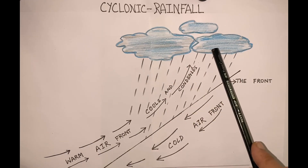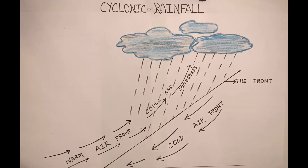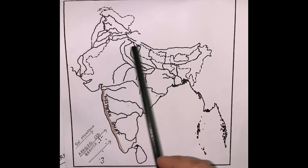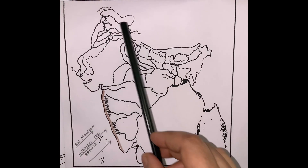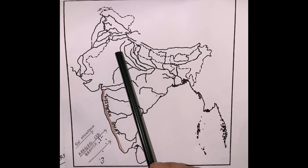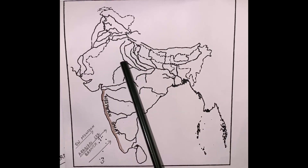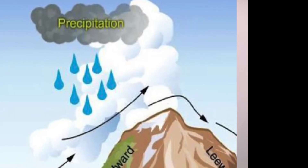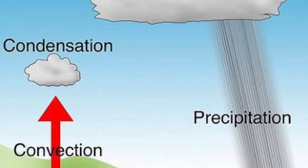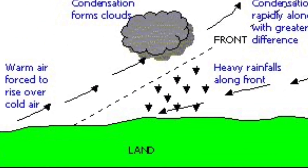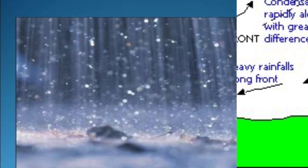When the clouds become heavier due to the accumulation of water droplets, rainfall follows. Winter rainfall in the northwest part of India is a typical example of cyclonic rainfall. It always occurs in the form of a thunder shower for a very short period of time. Hope you all enjoyed the topic on precipitation. If you are new to this channel, please like and subscribe. Thank you.